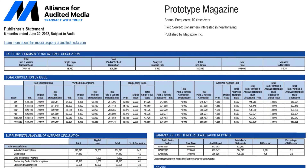The report begins by stating the period covered and providing some basic information about the magazine, such as the number of issues served, the target audience, and the publisher.